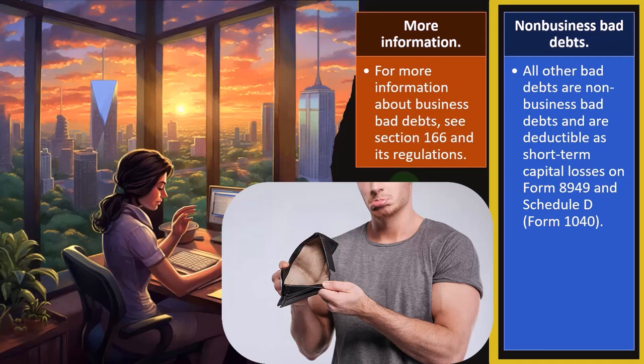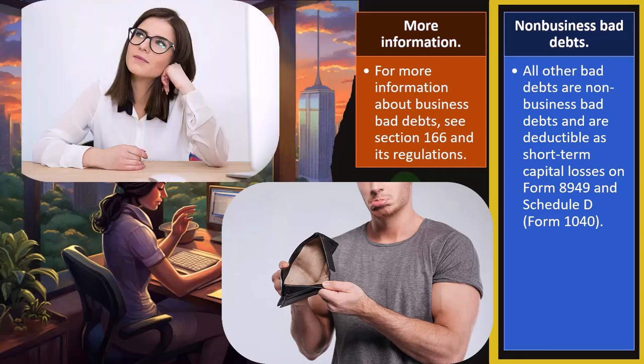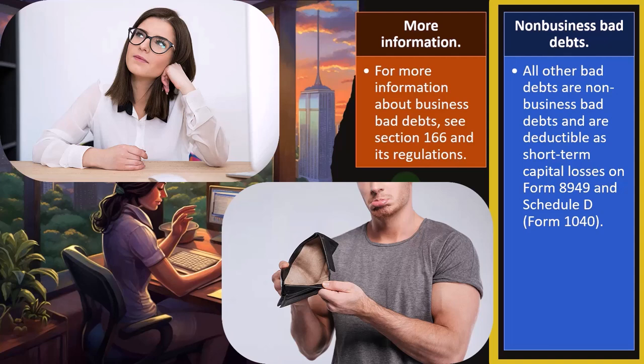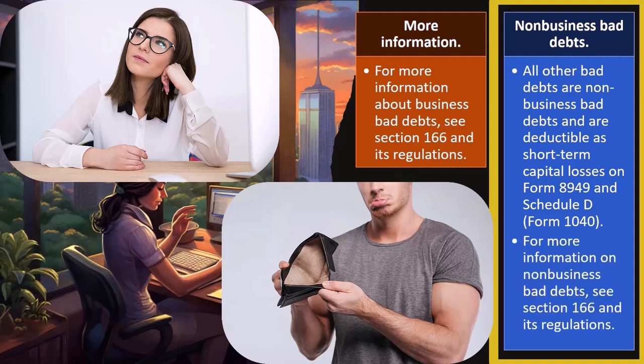If it's not business-related, you'll need to go to the personal side of things and see whether you can deduct it there. That's somewhat outside the scope of our main focus here, since our major thought process is those debts that are business-related. Our main obstacle is to separate what is business versus personal, which can be a little confusing sometimes, but usually it's fairly clear with bad debt — the people that owe us money. For more information on non-business bad debts, see Section 166 and its regulations.